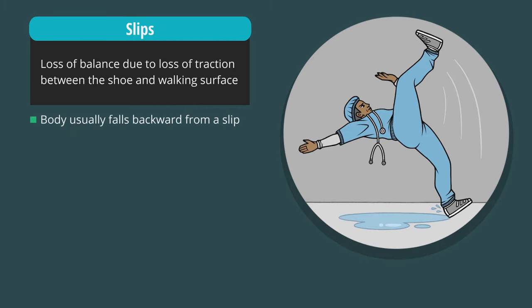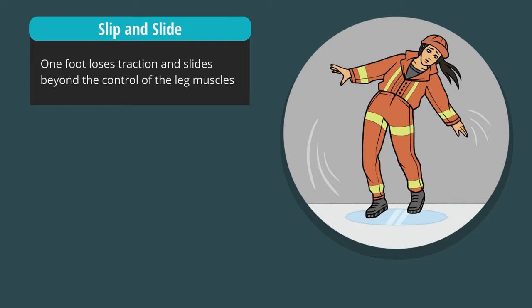The body usually falls backward from a slip. Slip and slide occurs when one foot loses traction and slides beyond the control of the leg muscles. Since the front or back foot can slide, the direction of fall can be in any direction. A slip and slide type of fall causes the most severe sprains and strains.